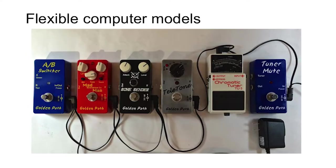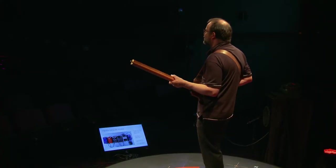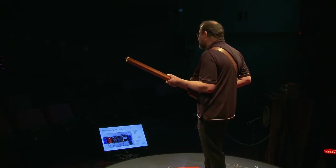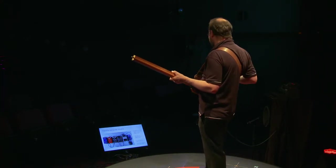Another thing I was interested in as a child and a teenager was guitar stomp boxes or effects boxes. These are interesting to make, but they're also interesting to rearrange, because changing the order of the boxes can change what the sound is coming out of them. So it's completely different putting a fuzz box, which creates a lot of distortion, before or after a phaser, which filters out some of that distortion.